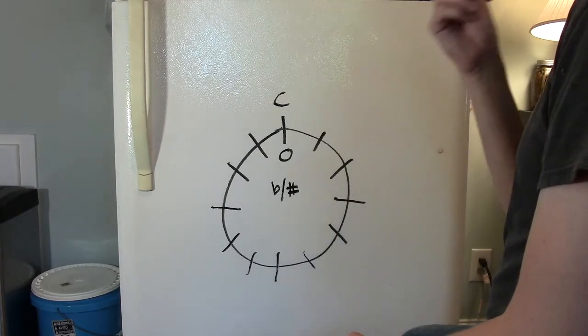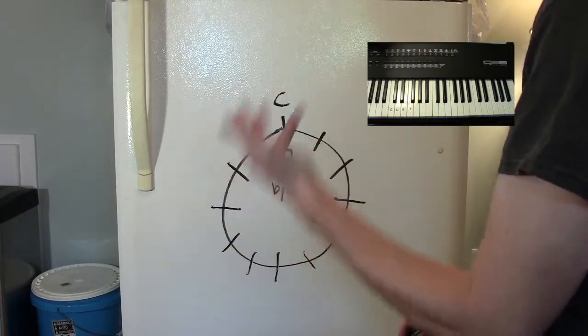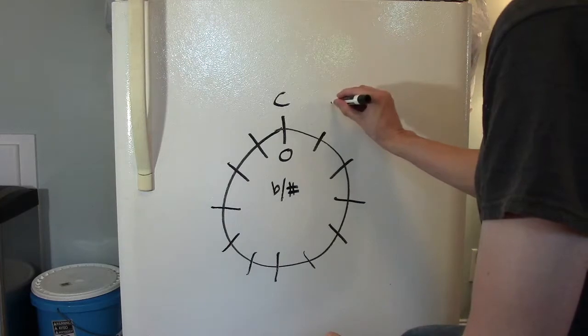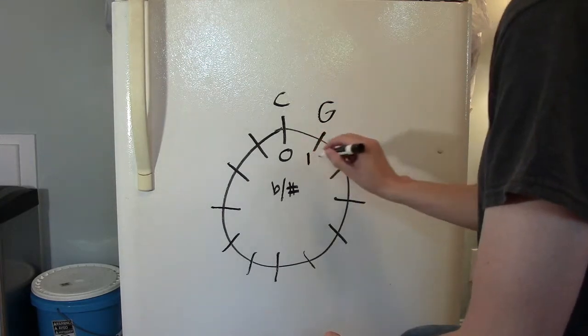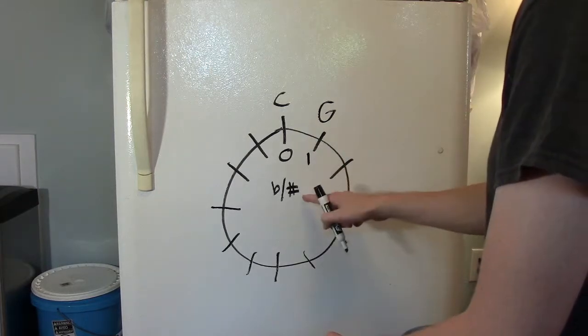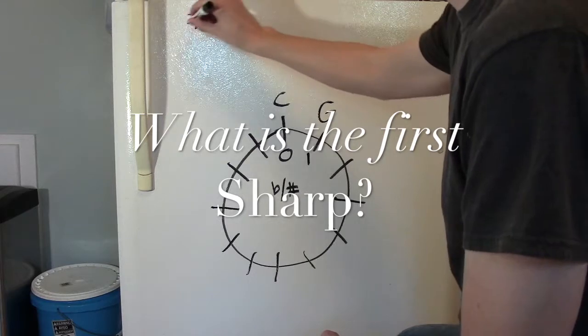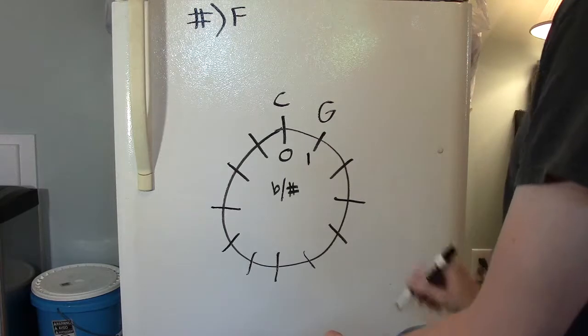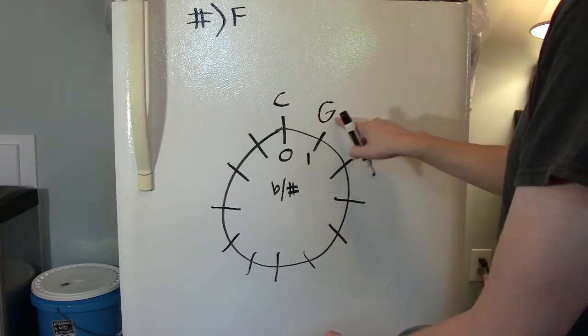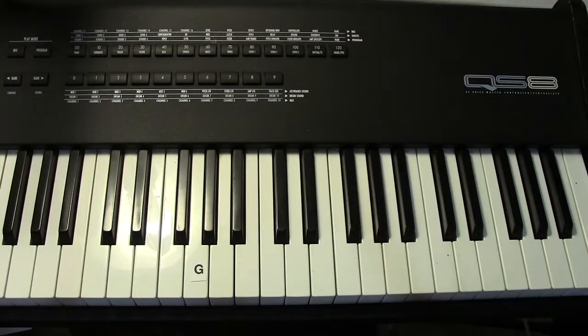C major, the key with no sharps or flats. Let's count up a perfect fifth from C. One, two, three, four, five. We get to our next key, the key of G major. G major has one sharp in it. What is that sharp? The first sharp is F. A G major scale is performed by going G up to the octave G with only one sharp, which is F sharp.